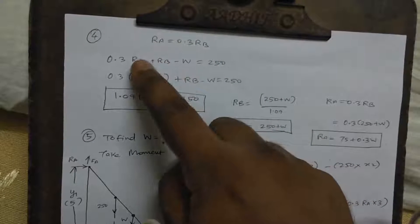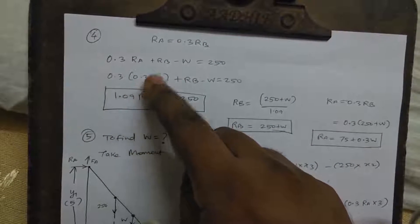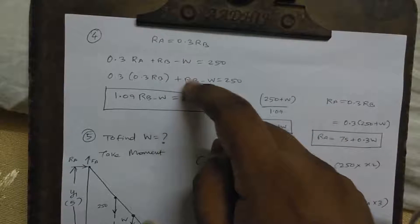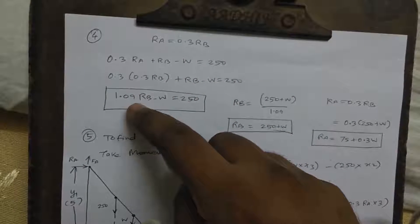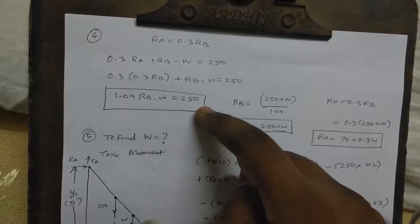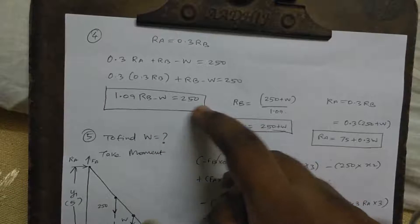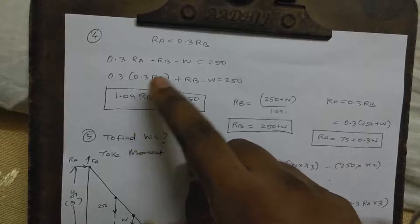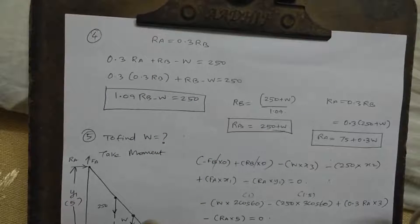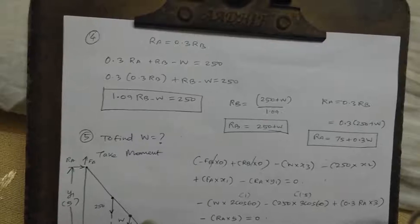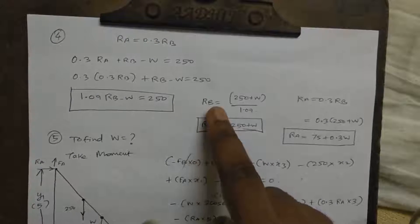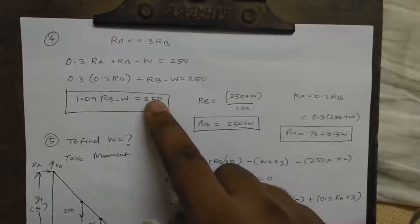Substituting RA equal to 0.3RB: 0.3 into 0.3 gives 0.09. So 1 plus 0.09 RB minus W equal to 250. Now solving for RB value and W value using the new method, RB equals 250.